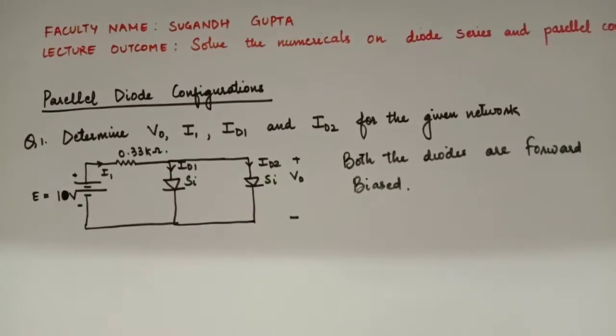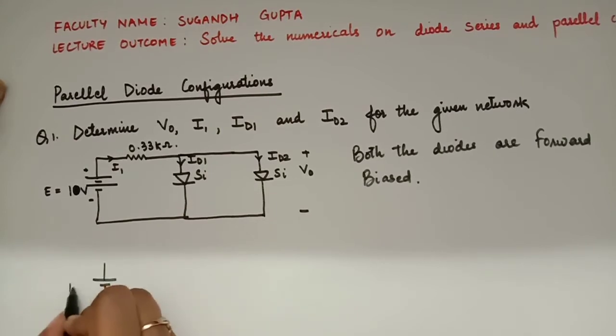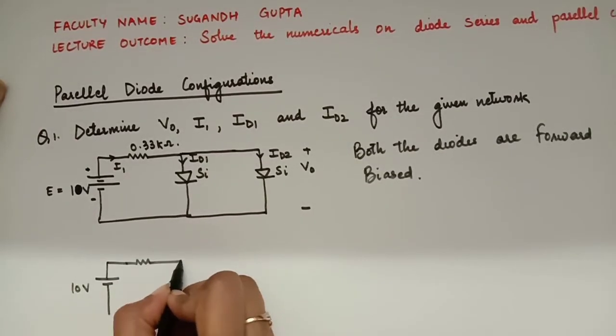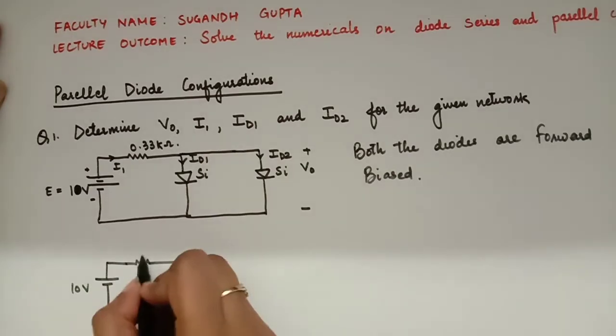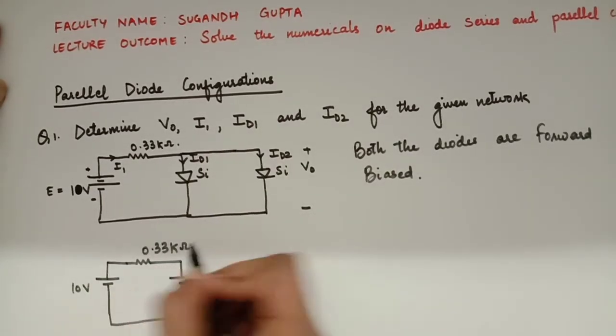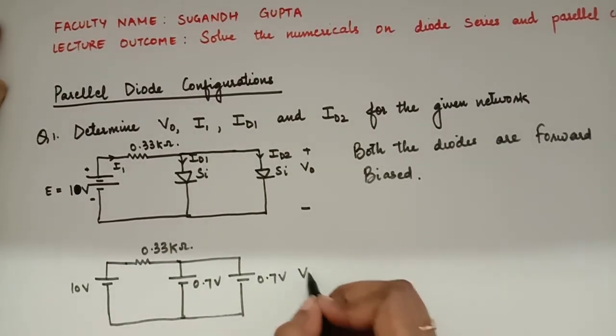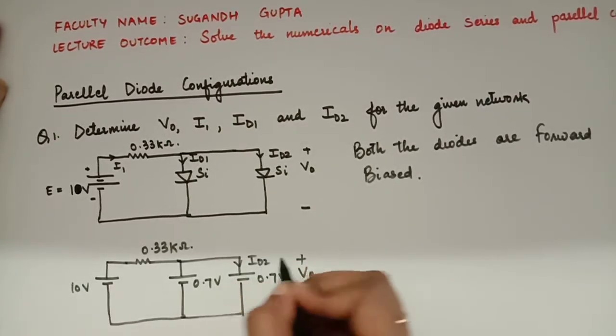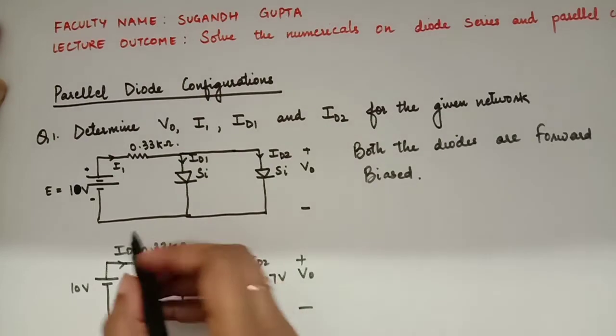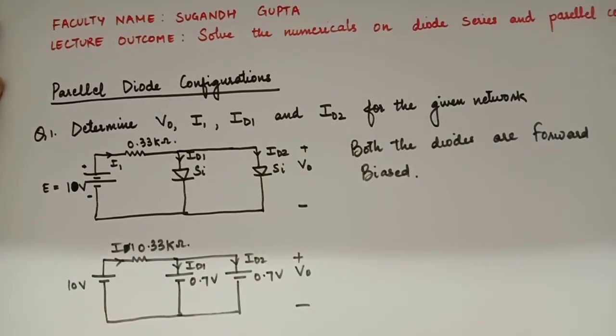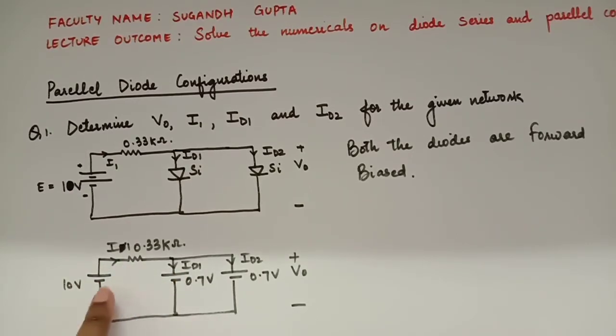Now, let's replace these diodes with the equivalent circuits. All right. So, this is the circuit. Now, if we apply the KVL in the first loop, we will be able to find, I think, I1.